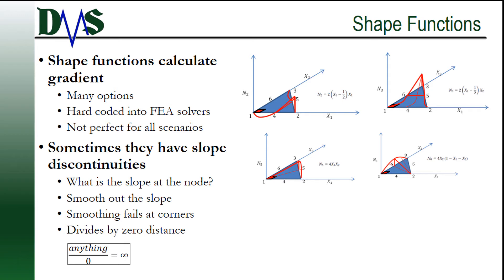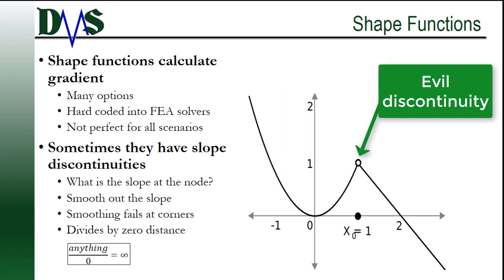These shape functions sometimes have a downside: they get a slope discontinuity going from one element to the next. That slope discontinuity is the root problem that causes stress singularities. See, stress depends on the slope of the shape function. That's the gradient. And if the slope is completely different at either side of the node, what value should you take right at the node?